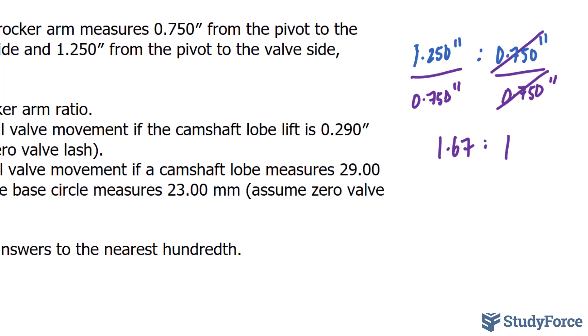And be mindful that this ratio is unitless. So 1.67 to 1 has no units at this point. That right there is the rocker arm ratio.